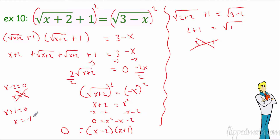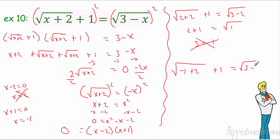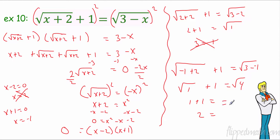Do we even have to check the next one? Yes — what if both of them don't work? We'd have no solution, so we have to check. For x equals negative 1: square root of negative 1 plus 2 is square root of 1, which is 1. So 1 plus 1 equals 2. On the right, square root of 3 minus negative 1 — add the opposite to get square root of 4, which is 2. It checks out! We don't have no solution — the answer is x equals negative 1.